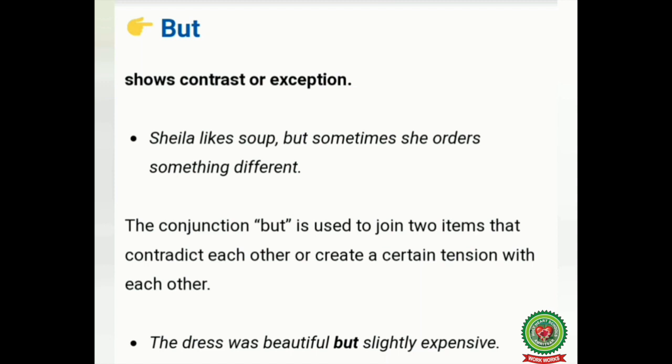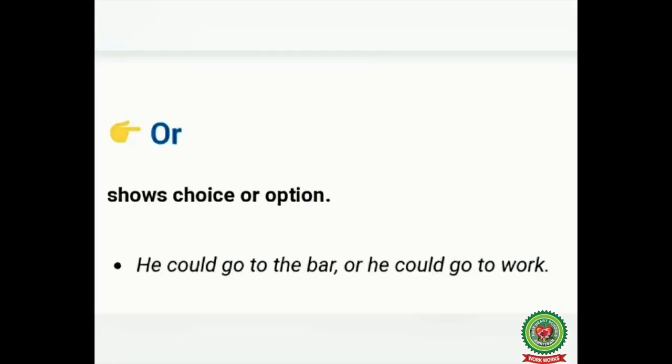The next coordinating conjunction is 'but.' 'But' is used to show a contrasting or opposite idea — ideas that contradict each other or create a certain tension. For example: 'Sheila likes soup, but sometimes she orders something different.' The two statements contradict each other. Another example: 'The dress was beautiful but slightly expensive.' No doubt the dress is beautiful, but the opposite condition is that it is expensive.